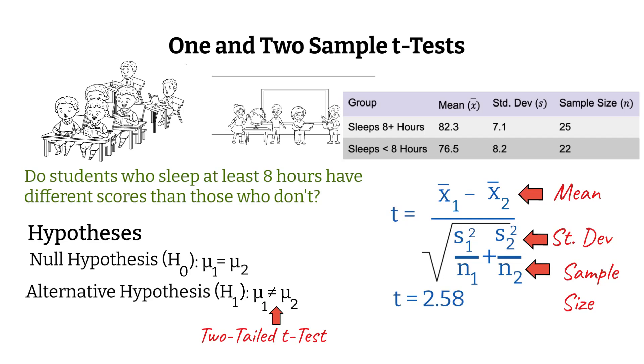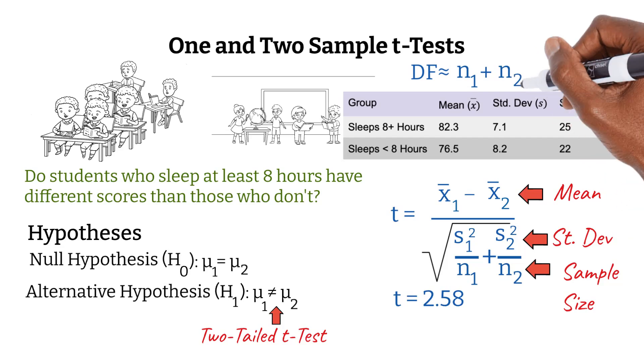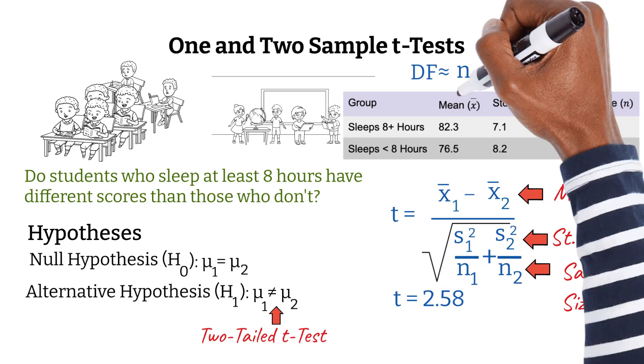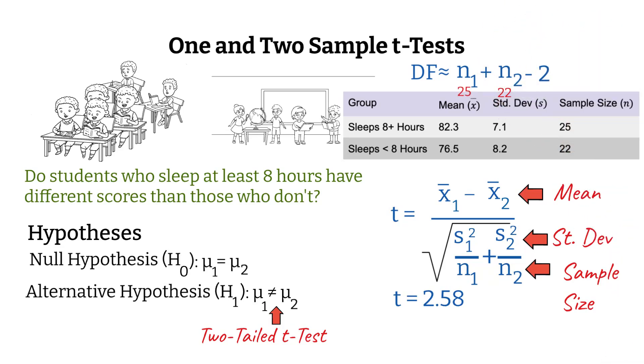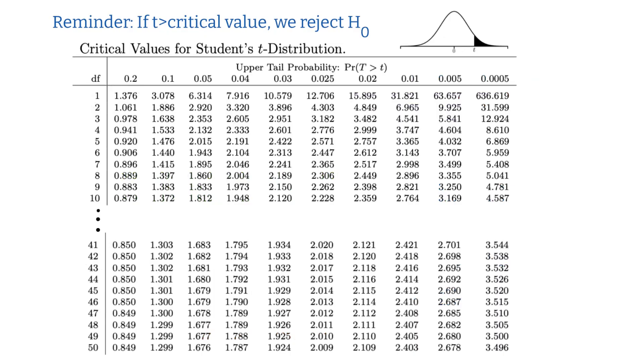To find an approximation of our degrees of freedom for a two-tailed test, we add the sample sizes, and this time we subtract 2. 25 plus 22 minus 2. The degrees of freedom is approximately 45. In order to make a decision, we're going to be using the critical value approach again. We calculated t is equal to 2.58, our degrees of freedom is approximately equal to 45. The significance level that we've chosen is 0.05.